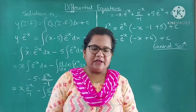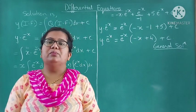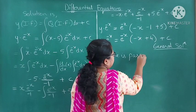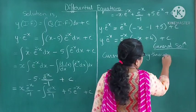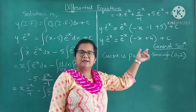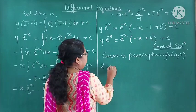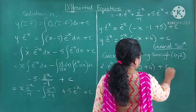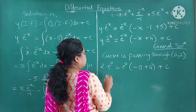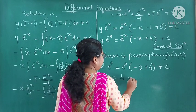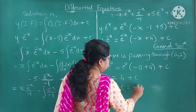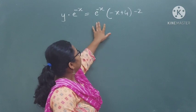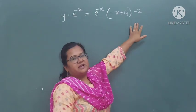After this, the question says find the equation of the curve passing through (0, 2). So we substitute x as 0 and y as 2. Substituting: 2 into e raised to 0 equals e raised to 0 into (minus 0 plus 4) plus C. Anything raised to 0 is 1, so this is 2 equals 1 into 4 plus C, that is 2 equals 4 plus C. Therefore C equals minus 2.